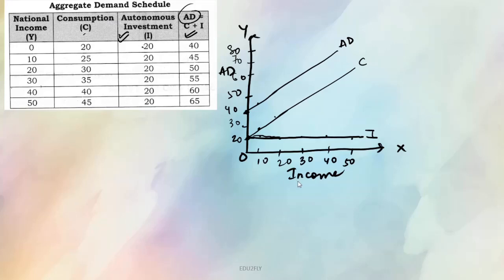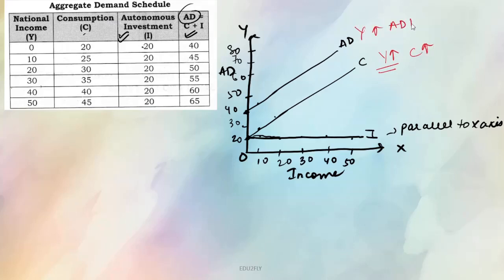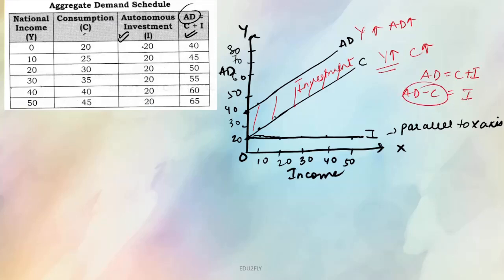Let us analyze this graph. Investment ka graph kaisa — parallel to x axis. C ka graph is increasing — because national income is also increasing, income humari increase hoti hai toh consumption bhi increase hoti hai, thereby aggregate demand bhi increase hoti hai. Ab AD aur C ke beech mein jo bhi difference hai, that is investment only. AD = C + I, toh AD minus C = I. Investment humari kaisi hai — constant. That means AD aur C ke graph ke beech ka difference bhi constant rahega. Investment jo hai humari constant chalti ja rahi hai, toh yeh graph — AD aur C ke parallel hote hai hamesha.